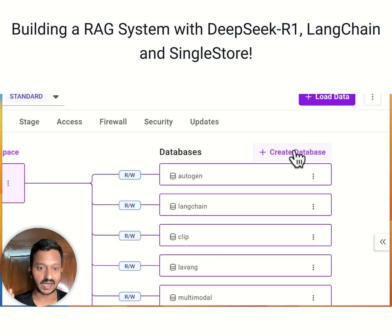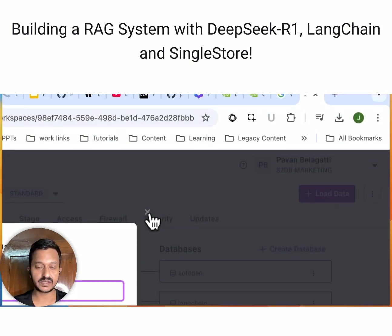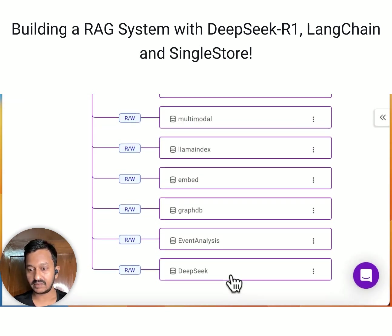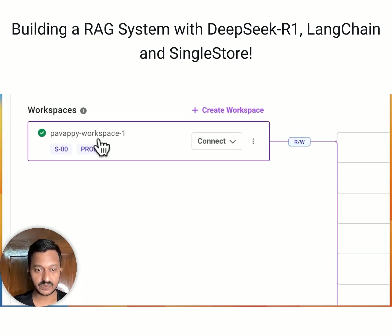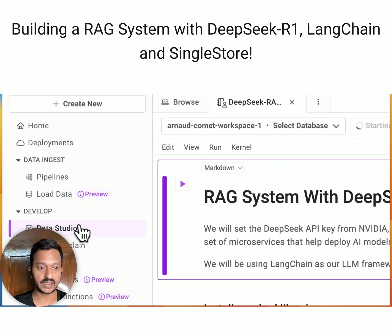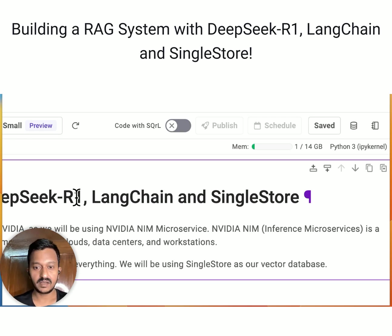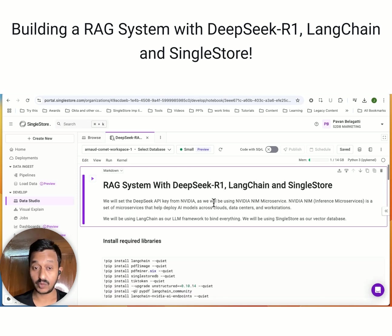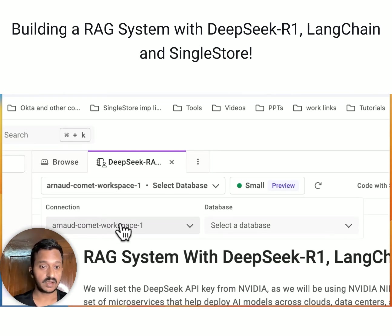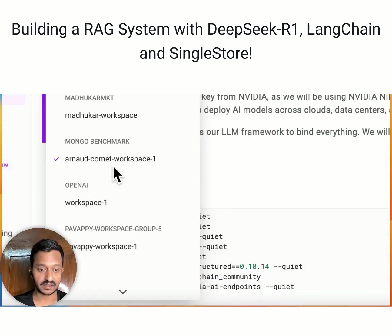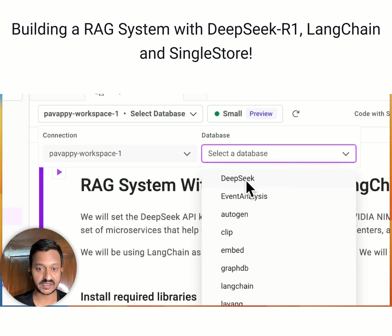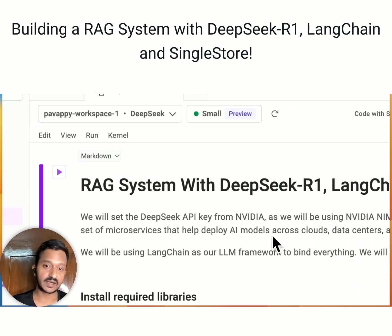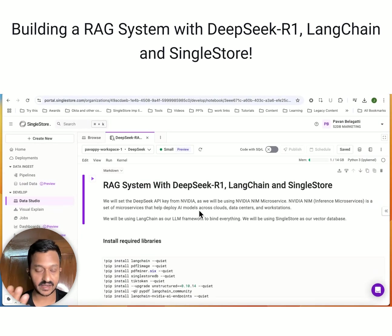After creating a workspace, attach to it and create a database - that's also very easy. I have my database ready; the name is DeepSeek. I created my workspace and the database. Let me go to the Data Studio. I created my new notebook and here I am. I'm going to share the repo of the whole code so you can copy, paste, and try it yourself. My workspace is PowerAppy Workspace and the database is DeepSeek, because we need a place to store our vector embeddings.